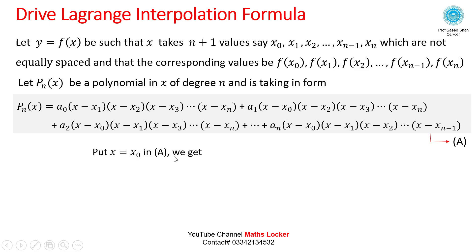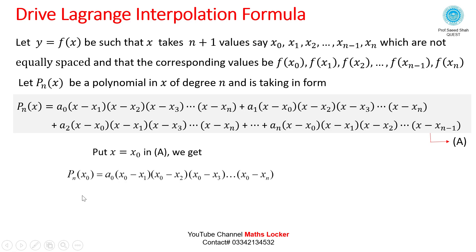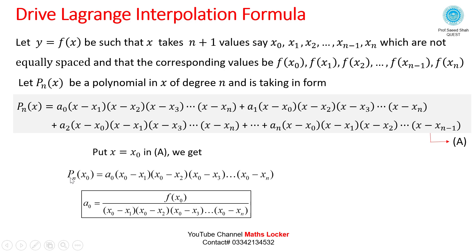Put x = x0 in equation A. Since this point lies on the polynomial, it must satisfy the equation. Substituting x0: the term with A1 becomes 0 (since x0-x0=0), and similarly all terms except the first become 0. Solving for A0: A0 = f(x0) / [(x0-x1)(x0-x2)(x0-x3)...(x0-xn)].